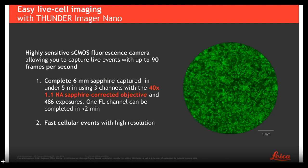The Thunder Imager Nano is equipped with a very sensitive fluorescence camera that allows you to capture live events at 90 frames per second. This fast camera speed is not only beneficial to capture live events — it also helps us create overview images of the six millimeter sapphire at the beginning to judge which region would be perfect to follow and select a cell of interest. On the right side, you can see a six millimeter sapphire where we created an overview image in two channels: the green fluorescence channel and transmitted light, using our 40X 1.1 sapphire-corrected objective. It took 486 tiles to create this overview image, and imaging in two channels took us less than three minutes because of the camera speed.